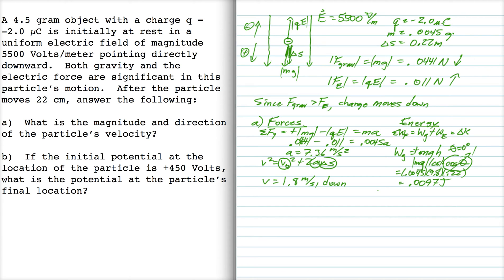And then the work done by the electric force, well, I can also use F delta s cosine theta, because the electric field and the electric force is uniform, so I get to use this form of the work, and this is minus 0.0024 joules.